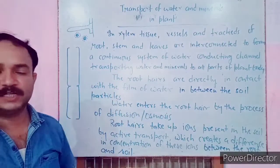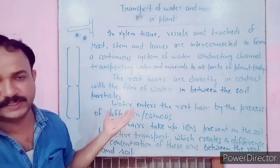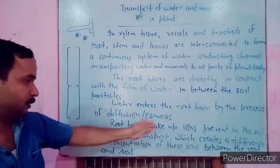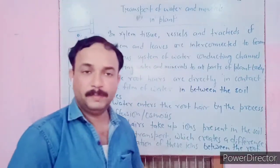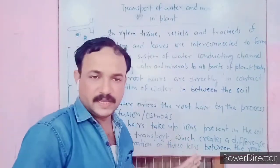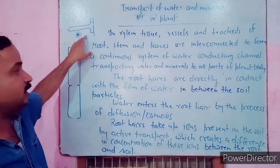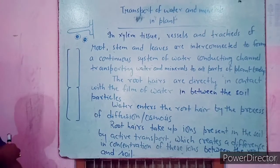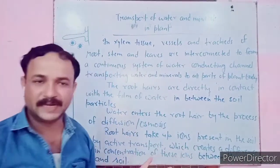Osmosis is the movement of water molecules from an area of higher concentration to an area of lower concentration across a membrane. Osmosis is a kind of diffusion, but diffusion applies to matter in any state, while osmosis is purely for water. So you can call the entry of water into root hair either diffusion or osmosis.